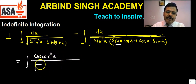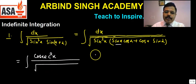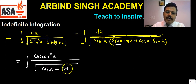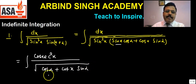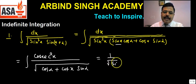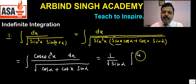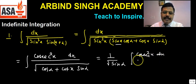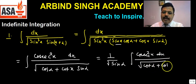After taking sin x common, what remains under the root is: cos α + cot x · sin α. If we further take sin α common, cos/sin becomes cot α. So sin α comes outside the root, and what remains is cosec²x dx in the numerator over √(cot α + cot x) in the denominator.